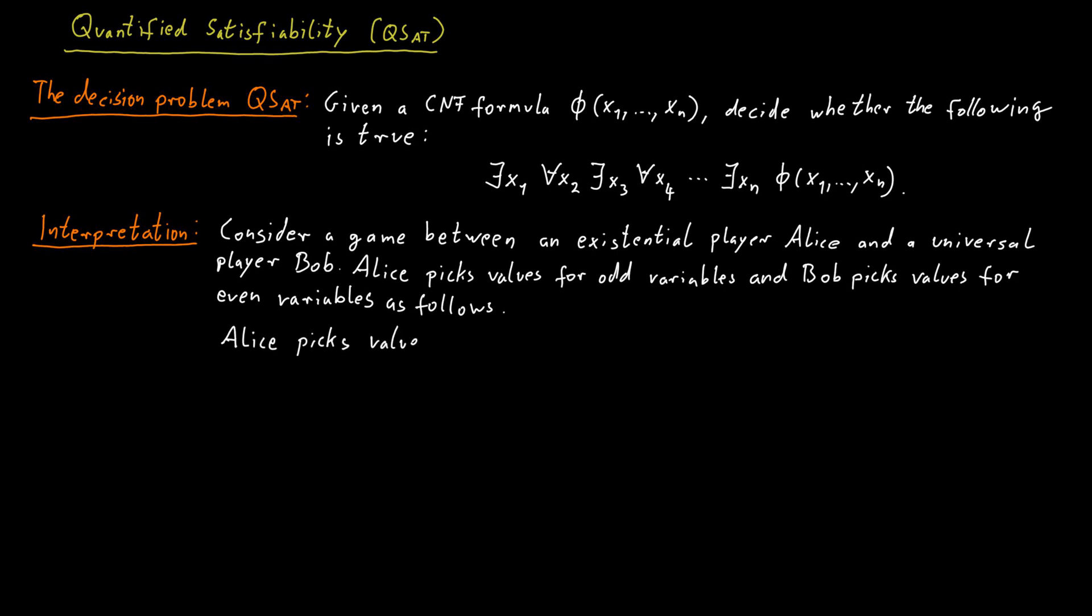Alice starts to pick a value for x1 and then Bob responds by picking a value for x2. And then Alice in turn picks a value for x3 and so on. So Alice and Bob alternate in assigning values to the variables. And the goal of the existential player, of Alice, is to make the final formula true. So she tries to be clever about how she picks the values for x1, x3 and so on. Her goal is to make the formula true in the end.